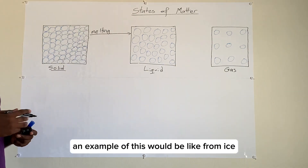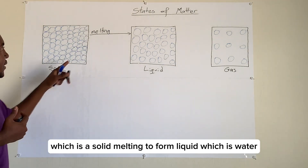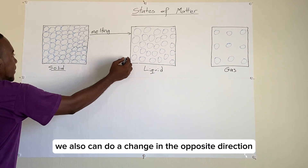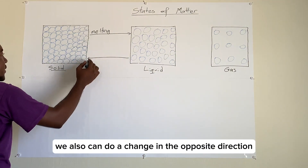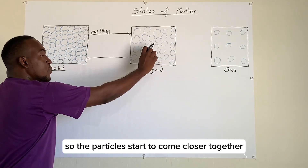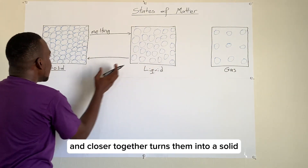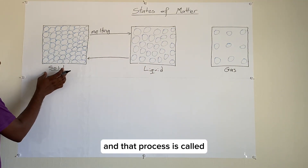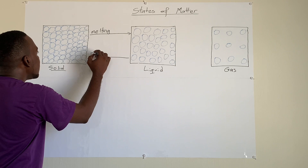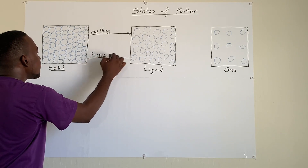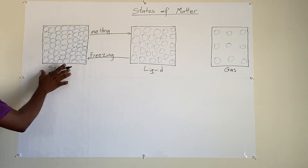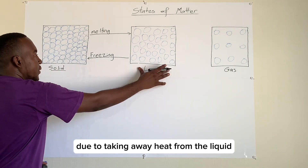An example of melting would be ice, which is a solid, melting to form liquid water. We can also do the change in the opposite direction, where a liquid loses its heat, so the particles start to come closer together. Closer together turns them into a solid, and that process is called freezing. So freezing is changing a liquid into a solid due to taking away heat from the liquid.